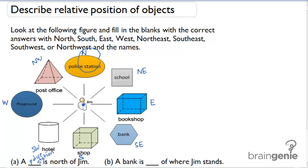The second part says a bank is blank of where Jim stands. So here's Jim and here's the bank. The bank is southeast of where Jim stands.